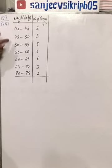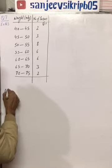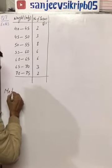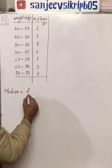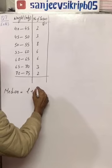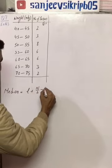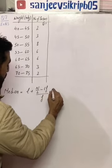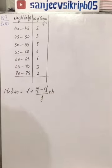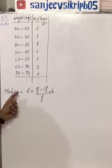So let's start the question. Before solving, let me write the formula for median which we will be using. Formula for median is L plus N by 2 minus CF over F multiply by H.